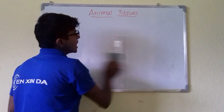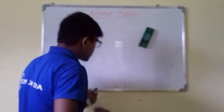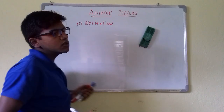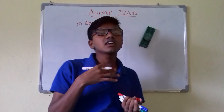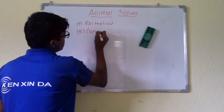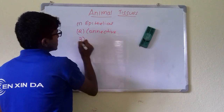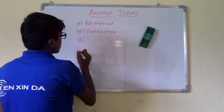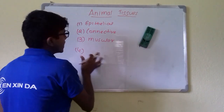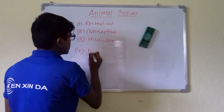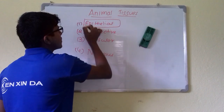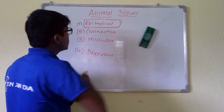Now there are four types of tissues in animals. First, epithelial tissues, which line the internal and external body of an organism. Second, connective tissue, which connects, supports, and binds tissues. Third, muscular tissue, which is contractile and helps in locomotion. And fourth, nervous tissue, which is excitable and responsible for transmission of nerve impulses. In today's lecture we will be dealing with epithelial tissue.